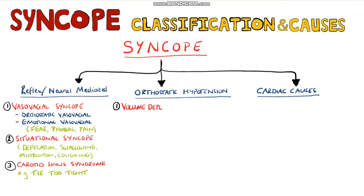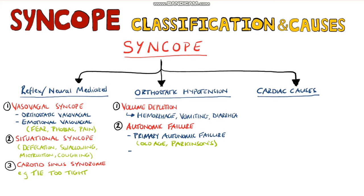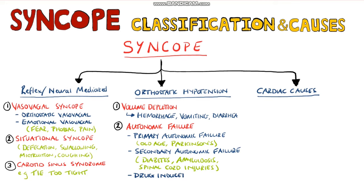Next, we have syncope due to orthostatic hypotension. This can be due to volume depletion, perhaps following haemorrhage, vomiting, or diarrhoea, or due to autonomic failure. Autonomic failure can be primary, due to older age or diseases like Parkinson's, or secondary to things like diabetes, amyloidosis, and spinal cord injuries. We may also see drug-induced orthostatic hypotension due to vasodilators, diuretics, and even antidepressants.